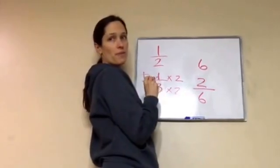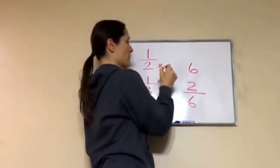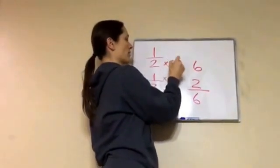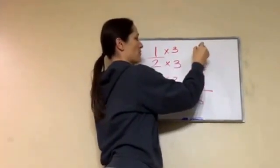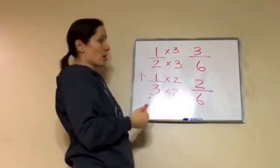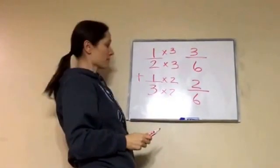Now, from 2 to 6, what do we do? 2 times 3, very good. So what we do right here, we have to do to the top. And 1 times 3 is 3. So 1 half is the same as 3 sixths, right?